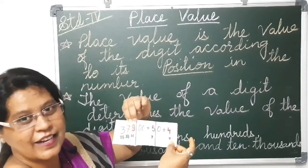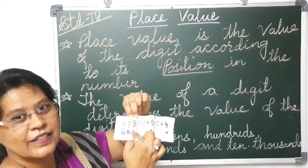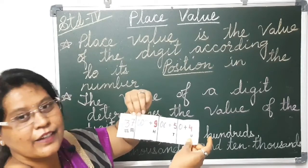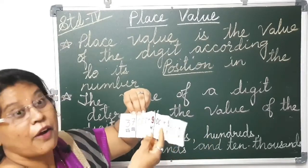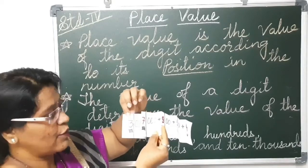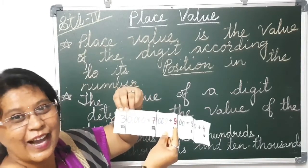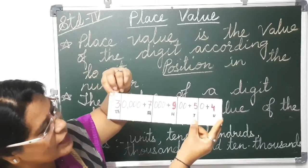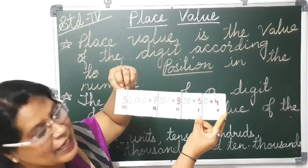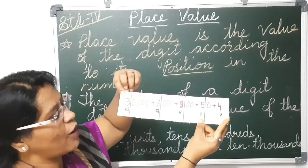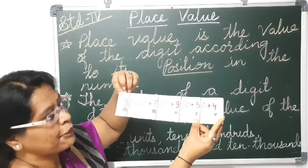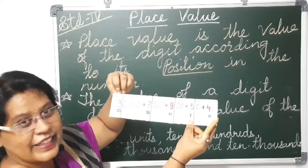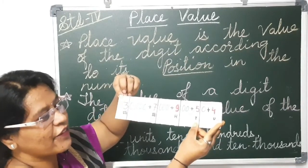9 is in hundreds place, so 9 into 100 is 900. 7 is in thousands place, so 7 into 1,000 is 7,000. Now 3 is in 10,000 place, so it is 30,000. You can see: 30,000 plus 7,000 plus 900 plus 50 plus 4 is the expanded form.